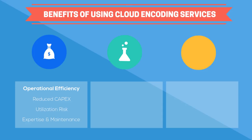Another benefit is that cloud platforms allow you to leverage the latest technologies. Development of new formats like adaptive bitrate streaming offer companies that use them huge advantages versus those that don't. With cloud transcoding, you can utilize these technologies whenever you want and without any real changes to your transcoding workflow. Codecs make video files smaller and more manageable. The rule of thumb is that the smaller and more efficient the codec, the more resources required to transcode a video file into that codec. Transcoding in the cloud allows you to leverage the more complex new codecs without provisioning any additional resources on your part.